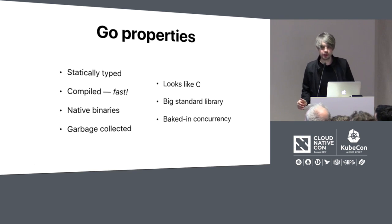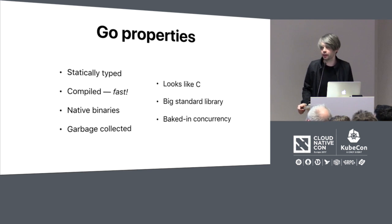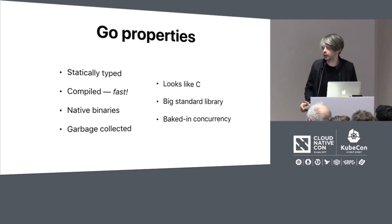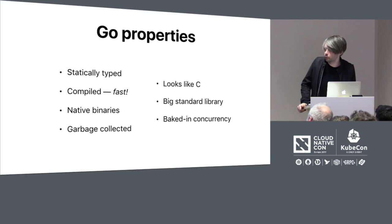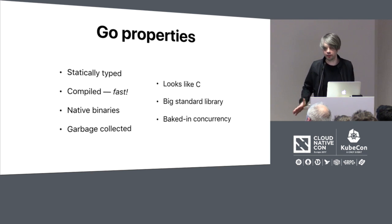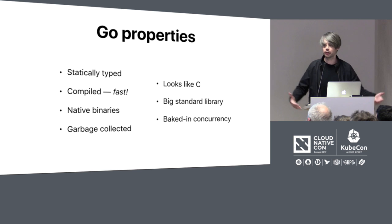Some properties of Go — these are the ones I find most interesting. It is a statically typed, compiled language, and one of the key things is that the compiler is very, very fast. A lot of decisions were baked into the language to support this important property, so the build-test-run cycles are very quick. It produces native binaries for a huge number of platforms, and you can cross-compile very easily — just setting an environment variable. If you have Go installed on your Mac, you can produce PowerPC binaries, AMD64 Linux binaries, no problem.